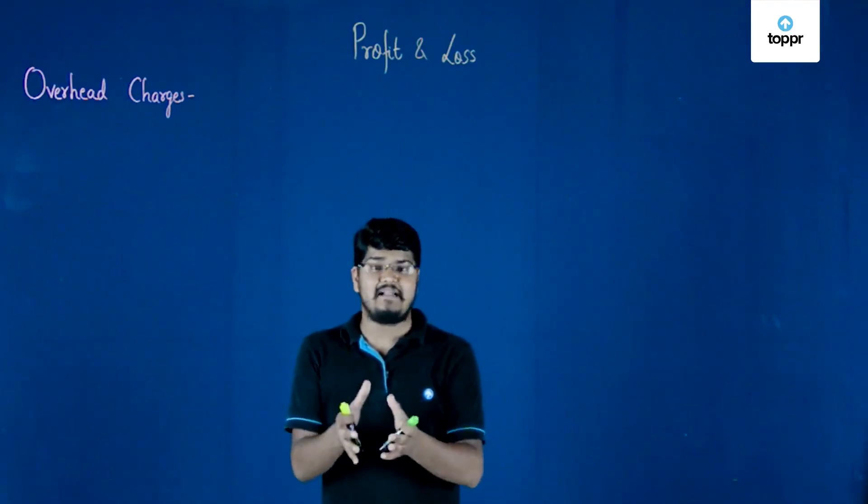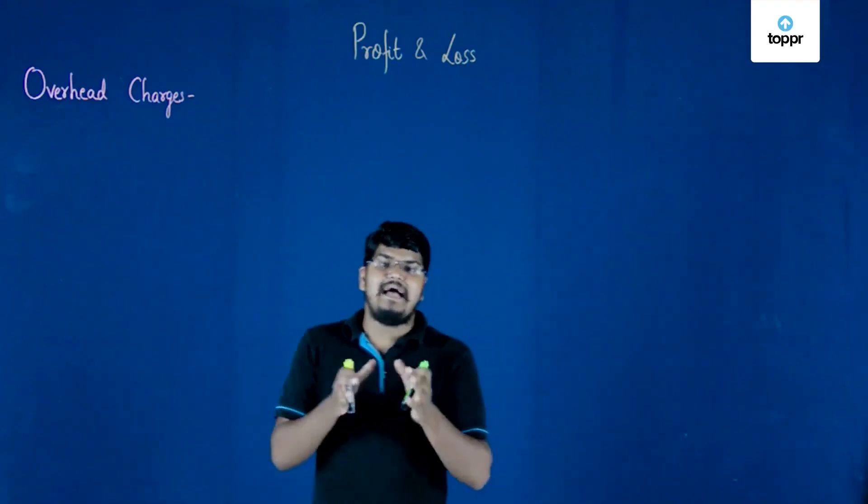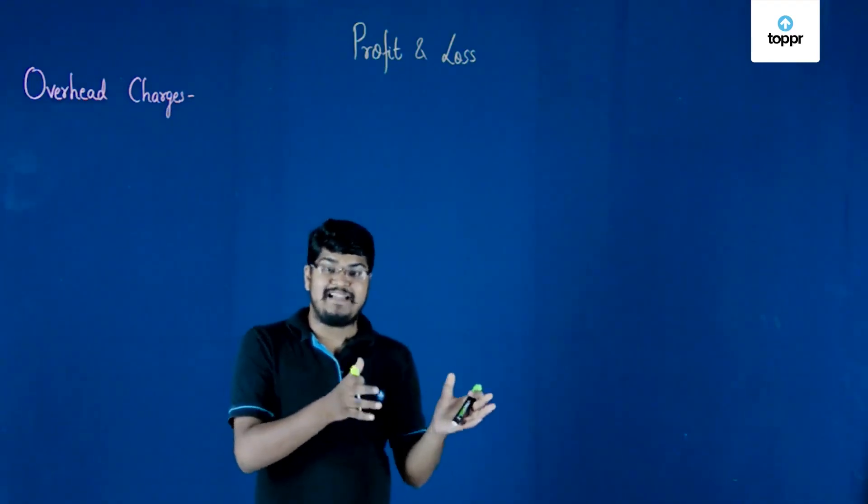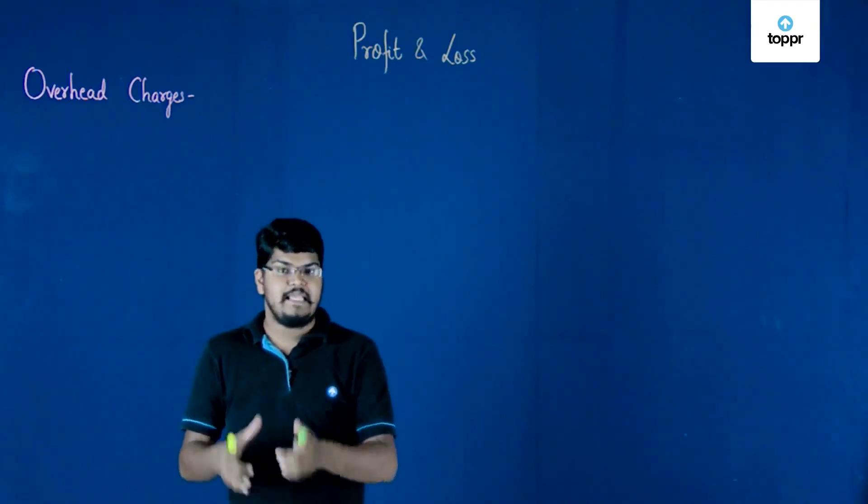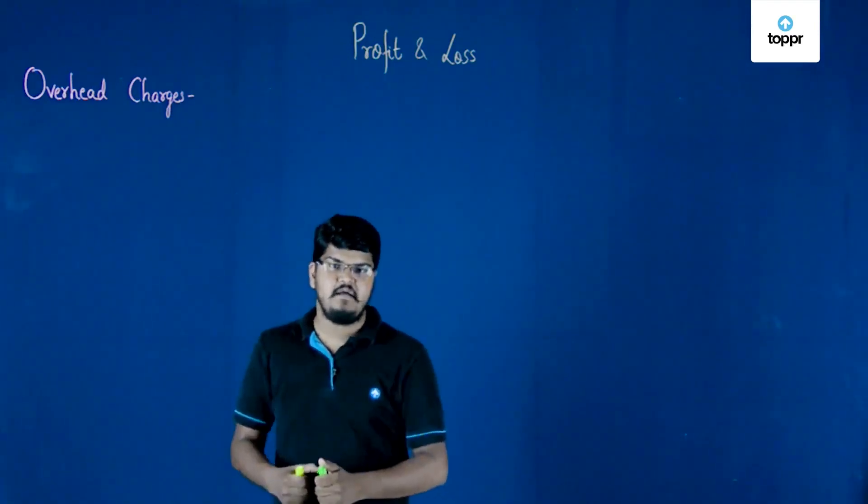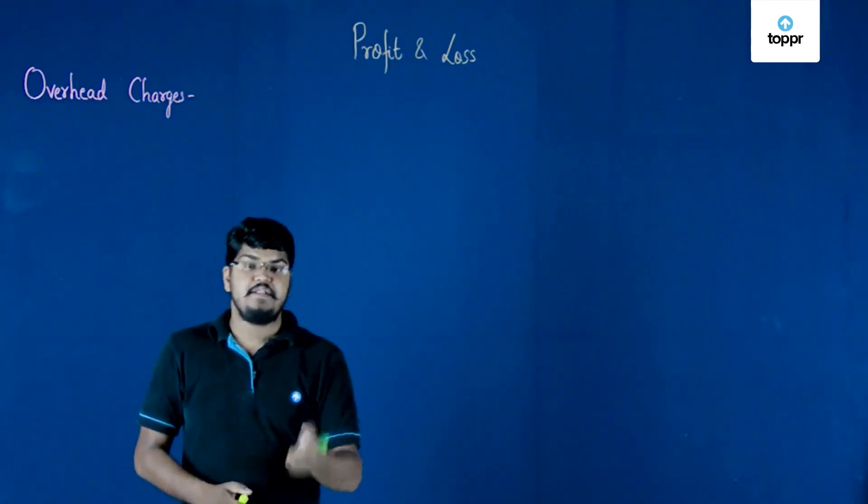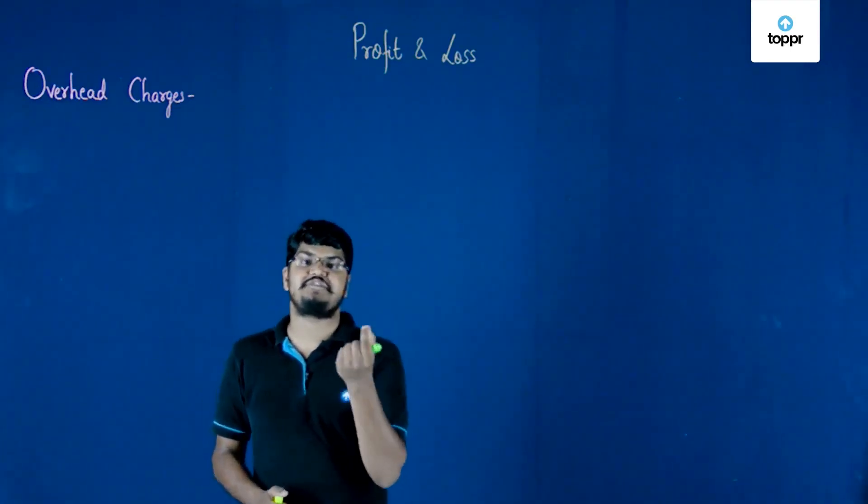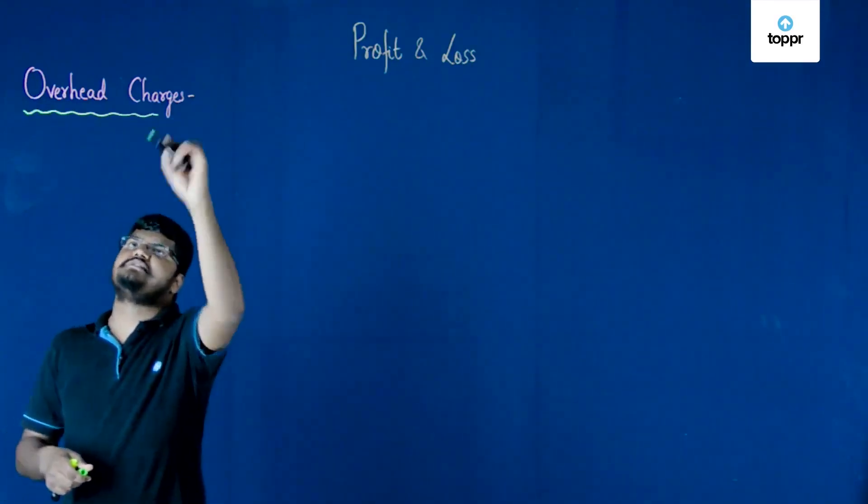So you of course paid that amount to the mechanic. Now, your bike has been put to use, but what has it cost you? X rupees for purchasing it and Y rupees for repairing it. These Y rupees which you have spent on repairing work come under the overhead charges.